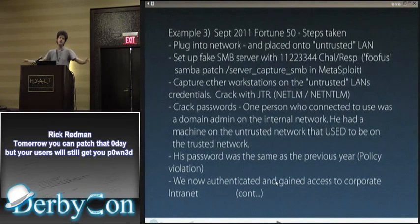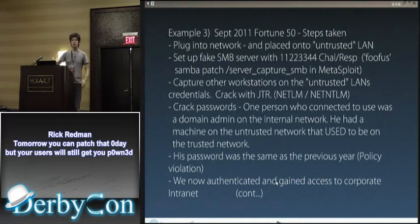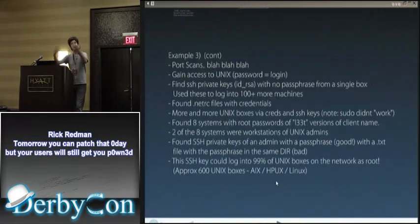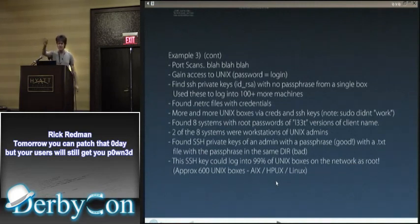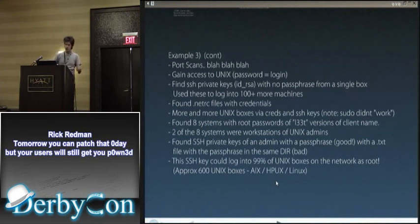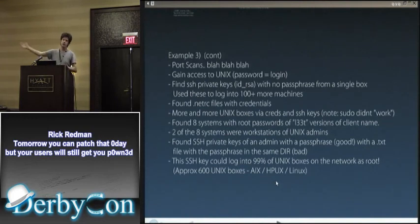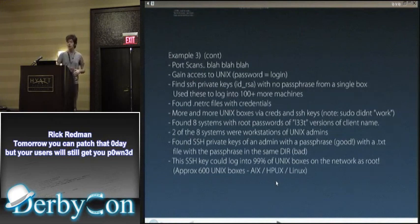We're now on the internal network — 60,000 to 80,000 machines spread over hundreds of countries. Port scanning, and we gain access to a single Unix box where the password equals the login. Nessus will find that. We enumerated the usernames — it was something like 'linuxfoo' with password 'linuxfoo.' Once we got on it, it was time to pillage. We went into home directories and found SSH private keys with no passphrase. We took a single SSH private key and logged into 100 machines — immediately on 100 Unix boxes.